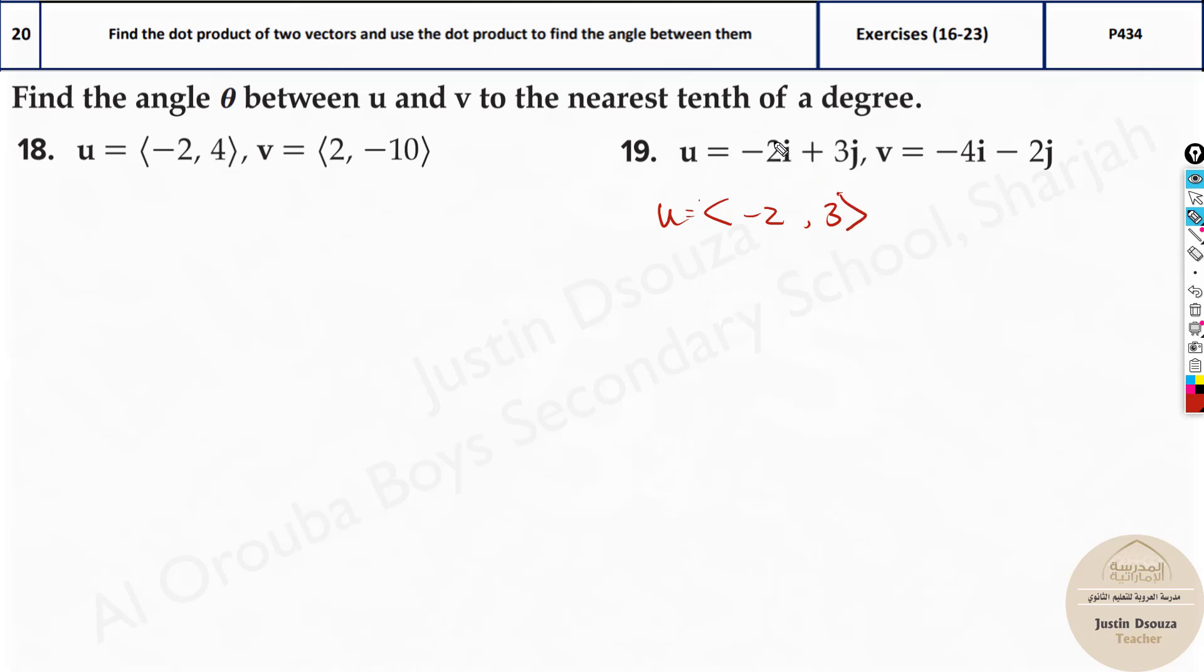So what we write is the coefficient of i, that is minus 2, and then the coefficient of j is 3. This is x and y. What about v equals? Same component form.